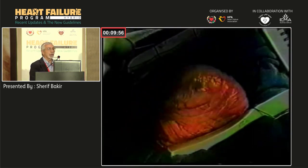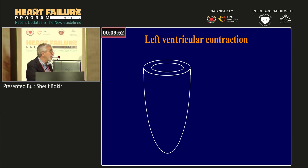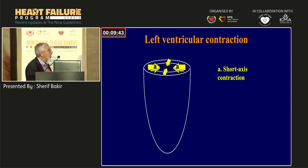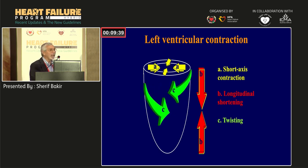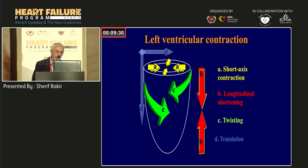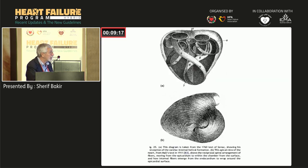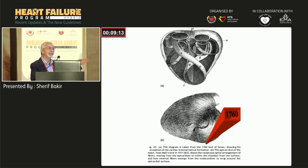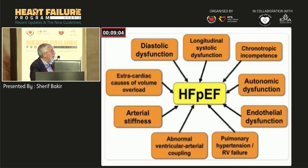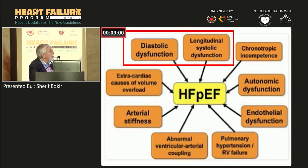The heart is a spiral organ — this is very important to understand. When we look at ejection fraction, we are only viewing the heart from one aspect. The ventricle contracts via short-axis contraction, longitudinal contraction, and spiral contraction. The ejection fraction does not capture the spiral component. The summation of all these gives the heart's total contraction, and hypertension plays a major role in disrupting this. We have known since the 17th century that the heart is spiral, not simple. The phenotype of HFpEF involves diastolic dysfunction and longitudinal systolic dysfunction, and the main cause is hypertension.